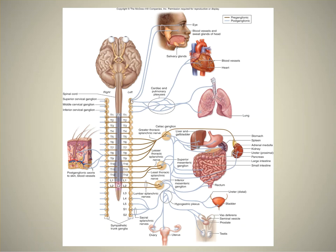One type is the sympathetic chain ganglia, found along here. Remember, it's thoracolumbar — it only comes out of the thorax or the lumbar section of the spinal cord.